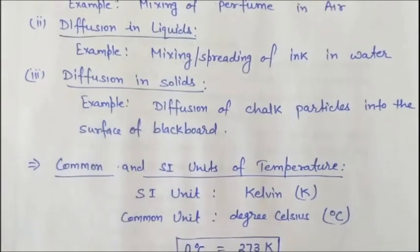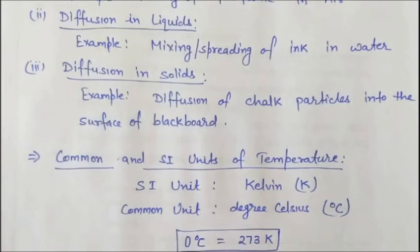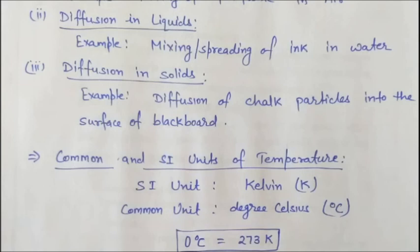The next topic is common and SI units of temperature. The SI unit of temperature is kelvin, with the symbol capital K. There is also the common unit degree Celsius, with the symbol °C. Zero degree Celsius is equal to 273 kelvin. So the relation between degree Celsius and kelvin is: 0°C = 273 K.